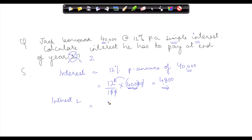So interest at the end of 2 years will be 4,800 into 2. So basically, you multiply the annual interest by the number of years. If instead of 2, this was 3, you would have multiplied this by 3. If it was 4, you would have multiplied it by 4, and so on.